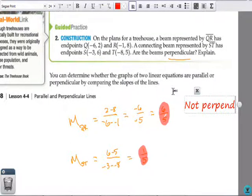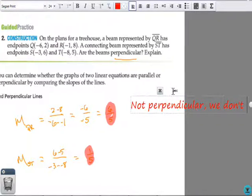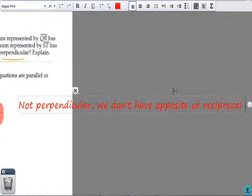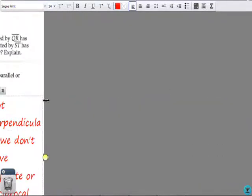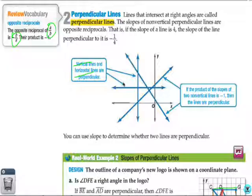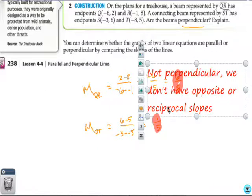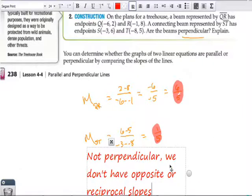Because, we don't have opposite or reciprocal slopes. Okay. Easy enough. There we go. Not perpendicular. We don't have opposite or reciprocal slopes. Should be and.